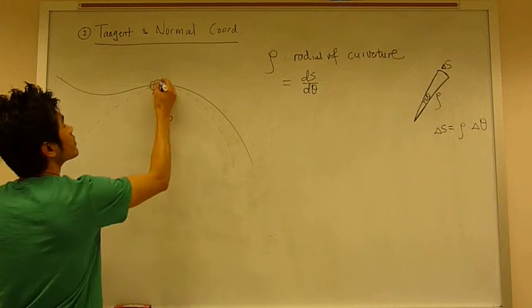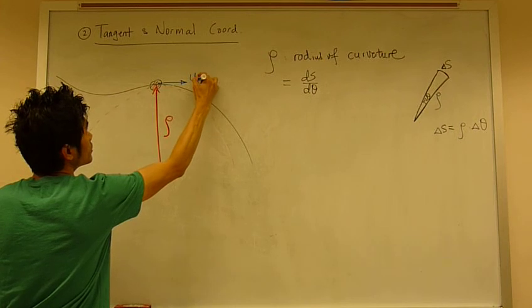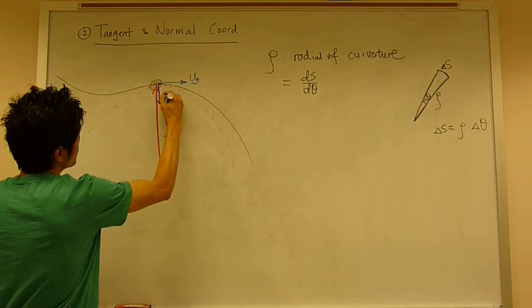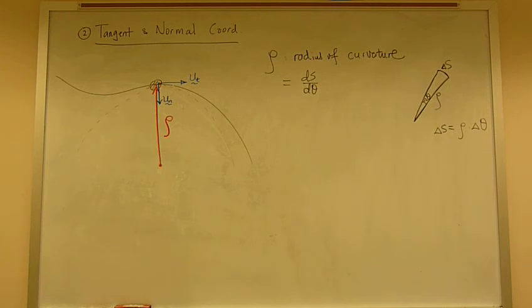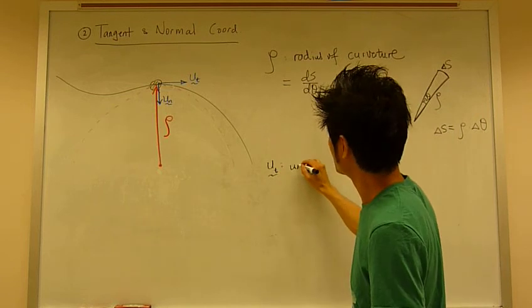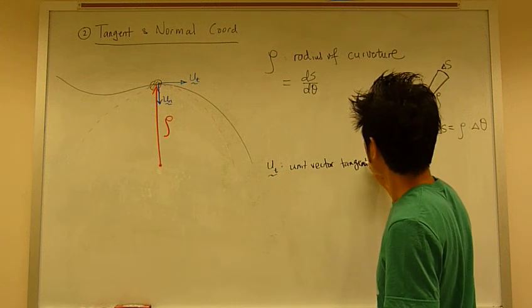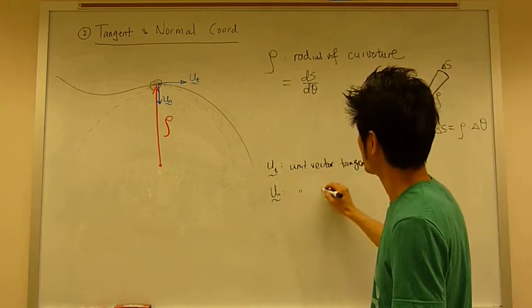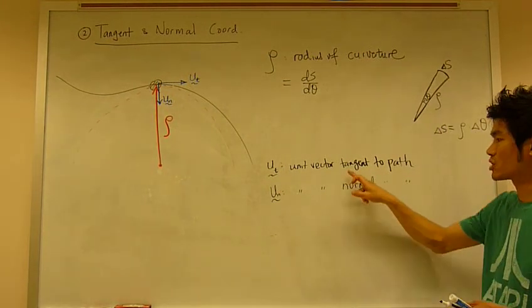The unit vectors would be called ut for tangent and un for normal. So ut is the unit vector tangent to the path, and un is the unit vector normal to the path. This is what I call tangent normal coordinate system.